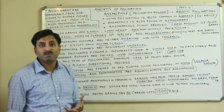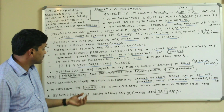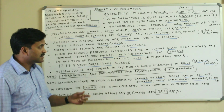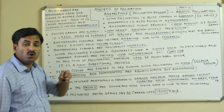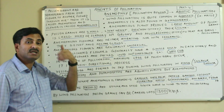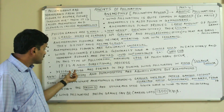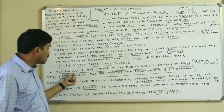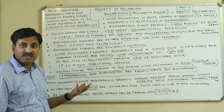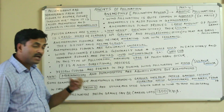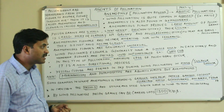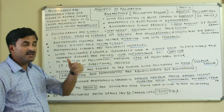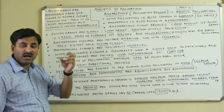Wind pollination occurs not only in angiosperms but also in gymnosperms. In pinus, for example, an enormous amount of pollen grains are released into the air, forming yellow clouds in the sky during wind pollination. This cloud of yellow pollen grains is called the sulfur shower.